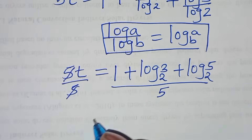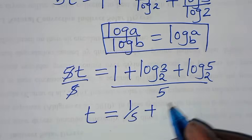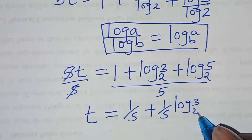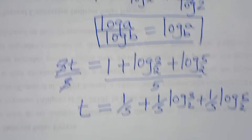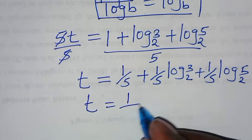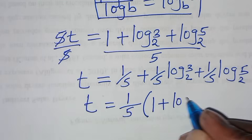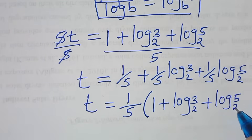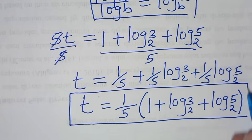Dividing both sides by 5, t equals 1 over 5 times the quantity 1 plus log 3 to base 2, plus log 5 to base 2. This is the value of t.